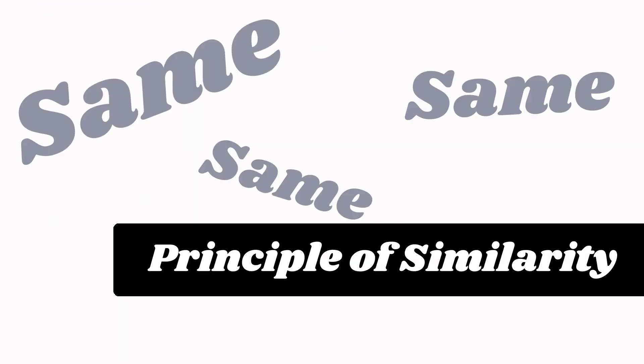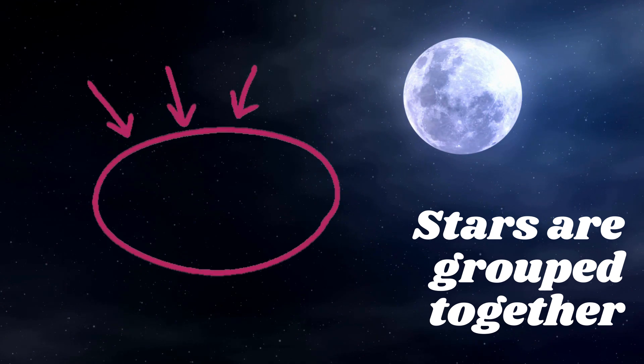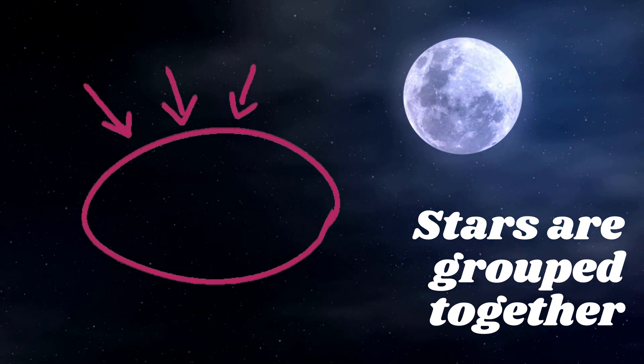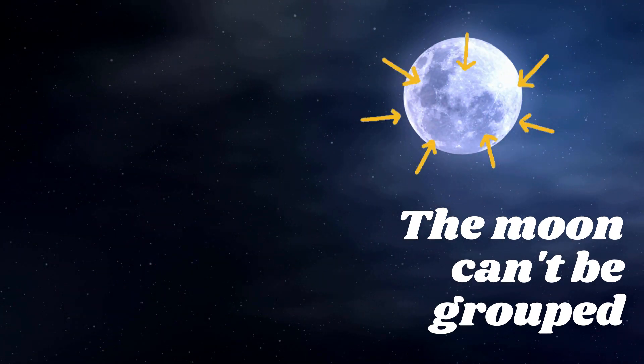Meanwhile, principle of similarity makes things pop. Imagine the night sky, tons of stars which your eyes tend to group since they look alike. But nothing looks similar to the moon which makes it pop among the similarities.